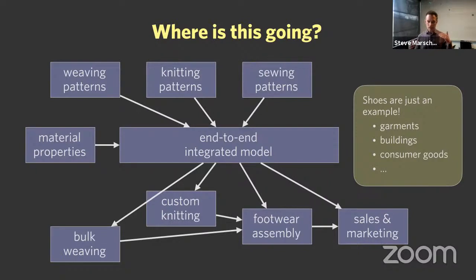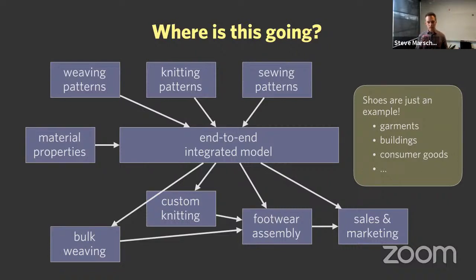A model that contains information about how fabrics are woven and knitted, how the whole thing is assembled, maybe even sewing instructions for automated cutting. It also knows about the properties of materials involved, so you can actually predict the whole shape and performance of the object, and even have a model good enough for rendering. This model would feed the same kinds of instructions needed for all different assembly steps. You could ask: if I used a different yarn in the fabric, how would that change everything — the properties, sewing pattern, appearance? You can make tweaks and optimizations across the entire pipeline that aren't possible now when everything is siloed.